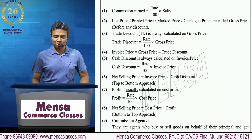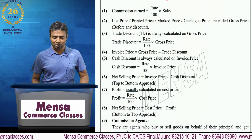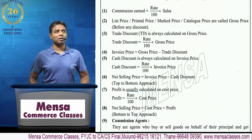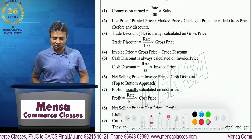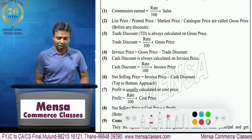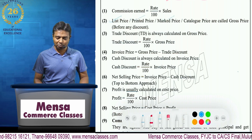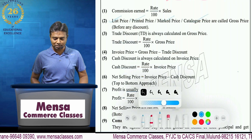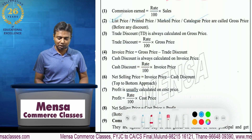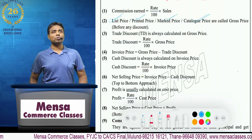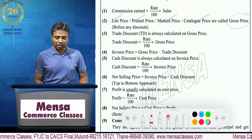Now, when we talk about discount, you have to first understand ki discount kis ke upar miltha hai — on what do we give discount. That is very very important. There are very important words like list price, printed price, mark price, catalog price. These are the four important prices, and they are called as gross price, that is before any discount.